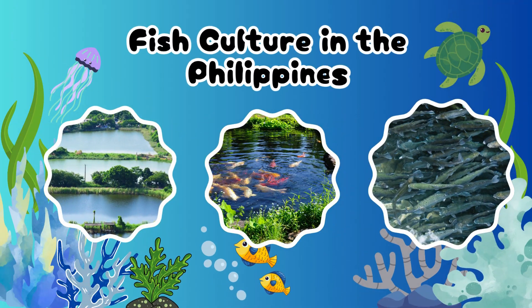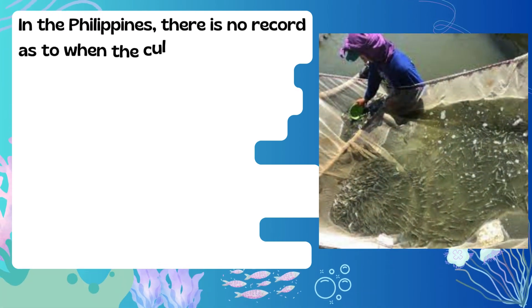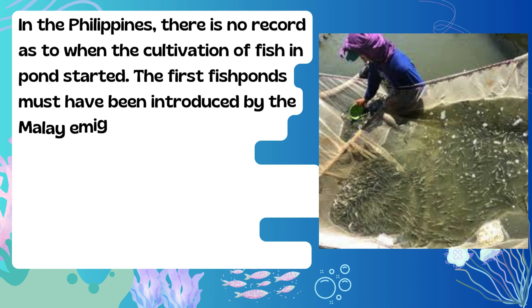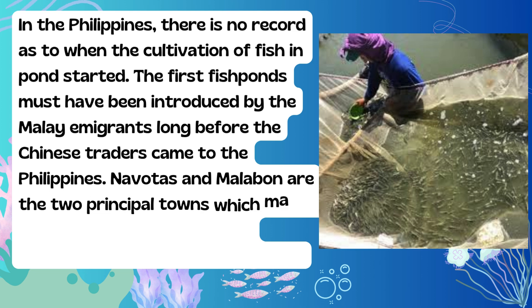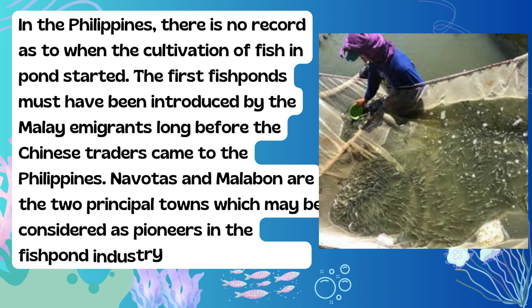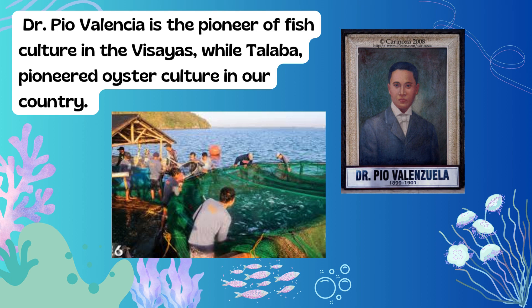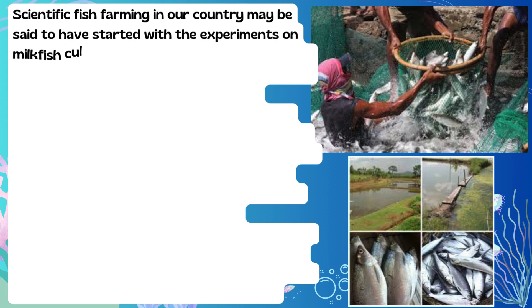Fish Culture in the Philippines: In the Philippines, there is no record as to when the cultivation of fish in ponds started. The first fish ponds must have been introduced by the Malay emigrants long before the Chinese traders came to the Philippines. Navotas and Malabon are the two principal towns which may be considered as pioneers in the fish pond industry in the Philippines. Dr. Pio Valencia is the pioneer of fish culture in the Visayas, while Taleba pioneered oyster culture in our country. Scientific fish farming in our country may be said to have started with the experiments on milkfish culture in 1940.